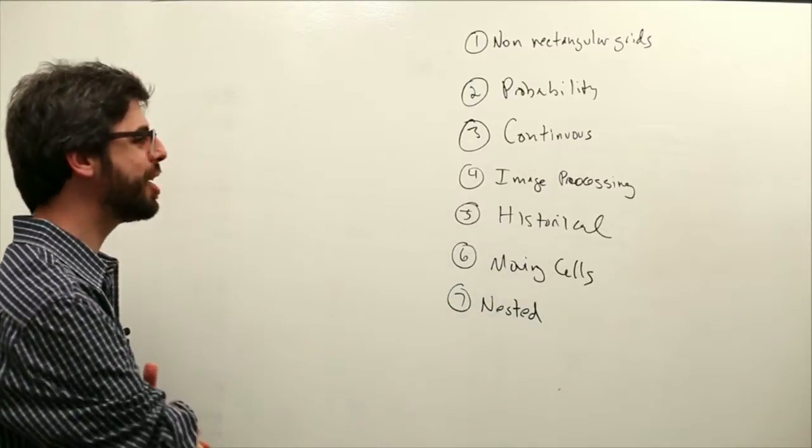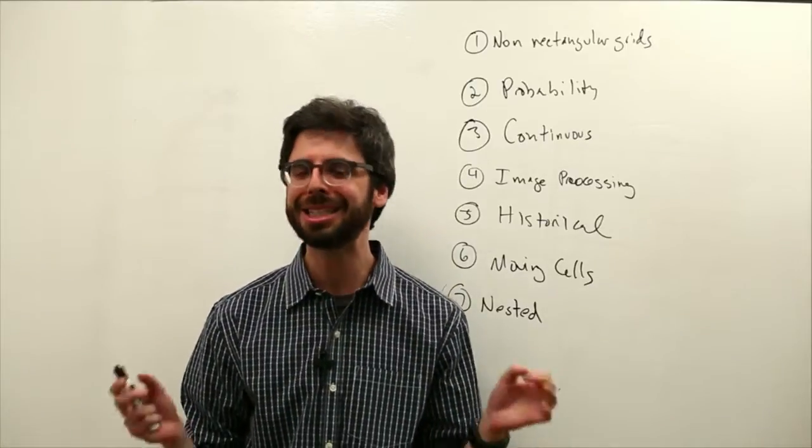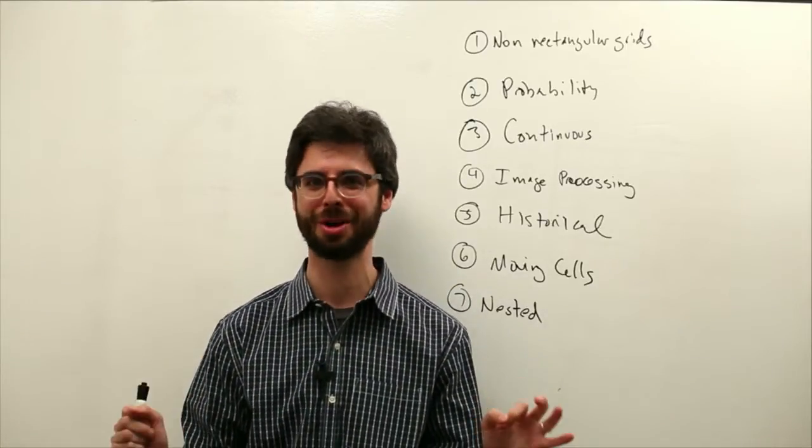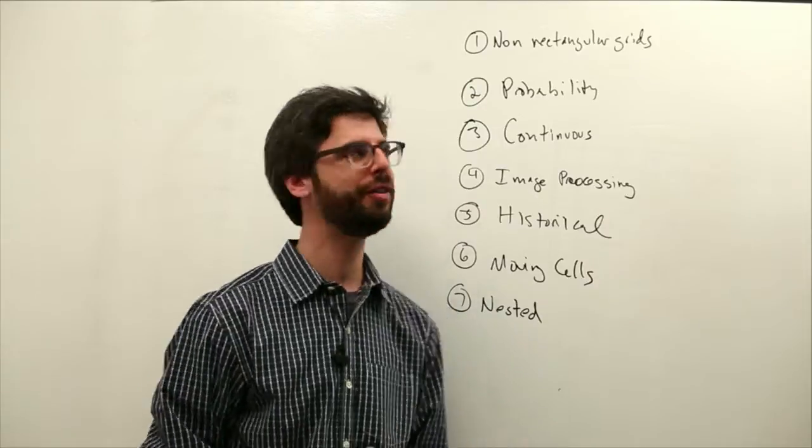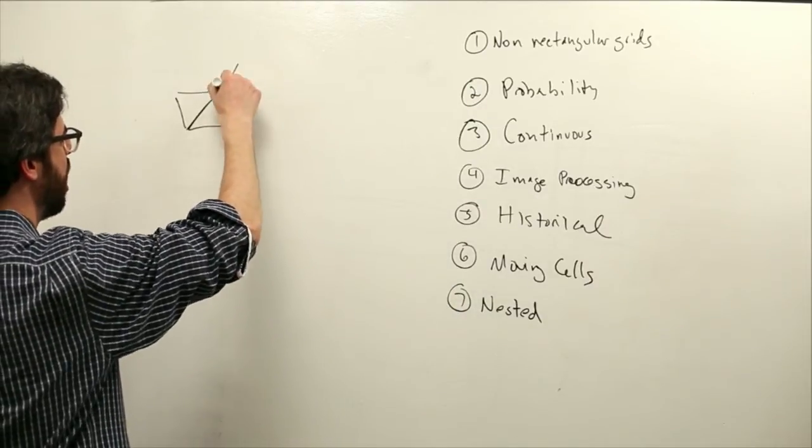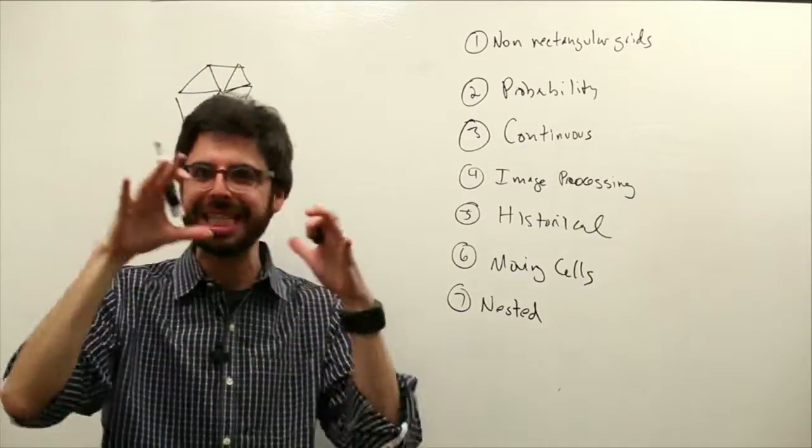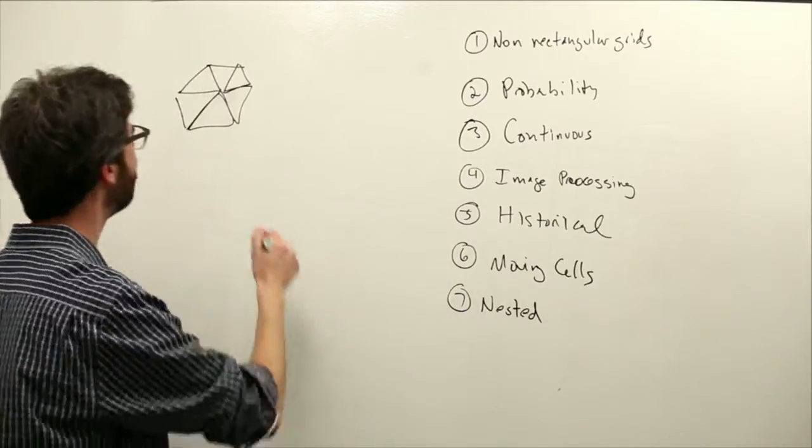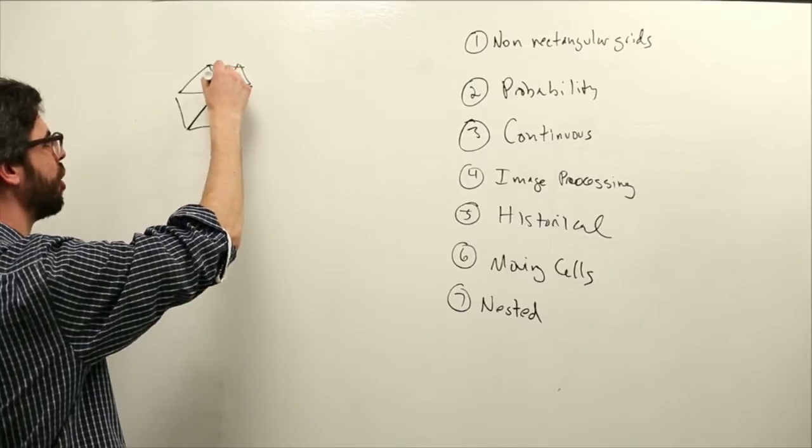So one thing that you might start with at first is simply, the CA doesn't have to be a perfect grid of cells, right? What if it is a whole bunch of tiled triangles or arbitrary polygons or some sort of crazy Escher-like tiling? How would you have this cell state change based on its neighbors?